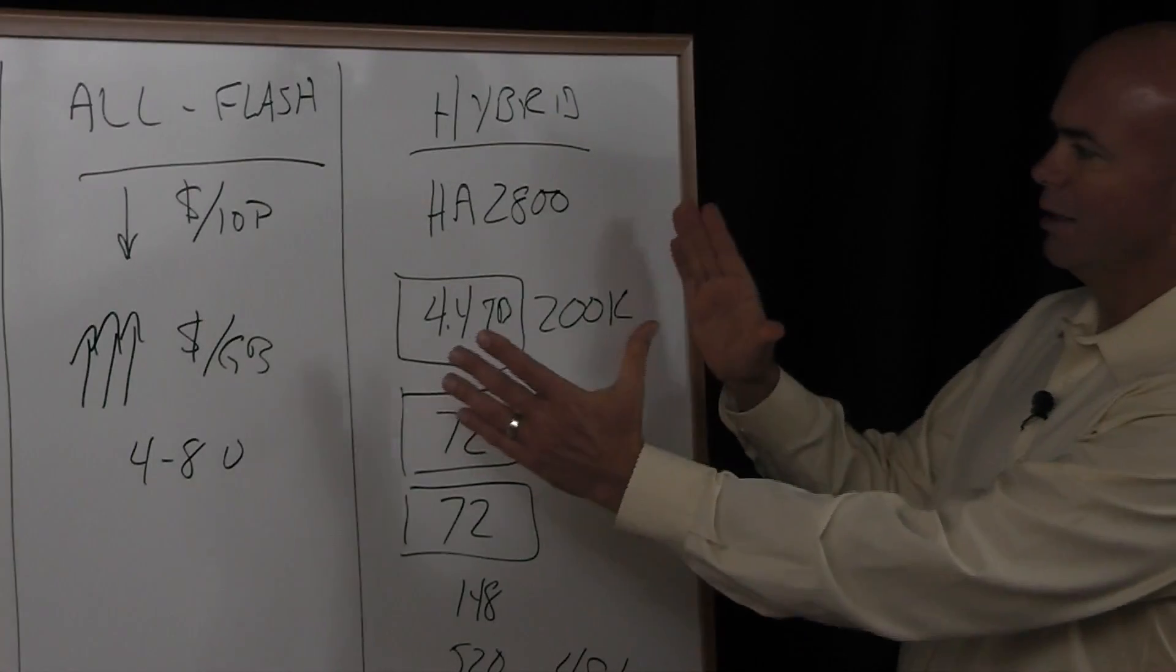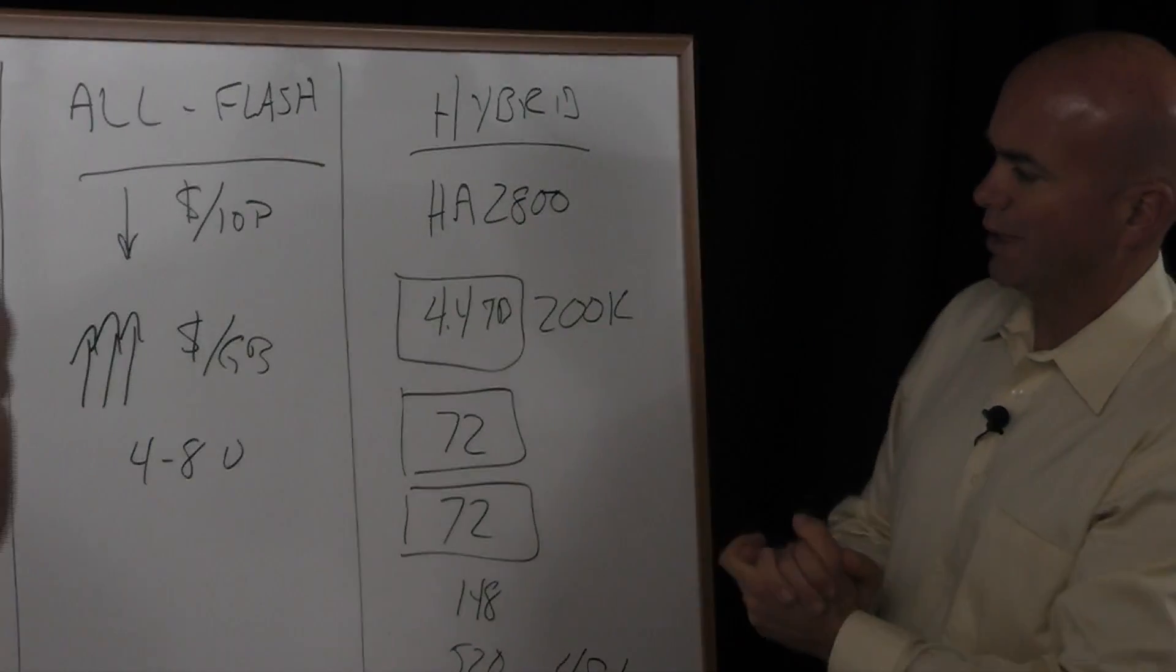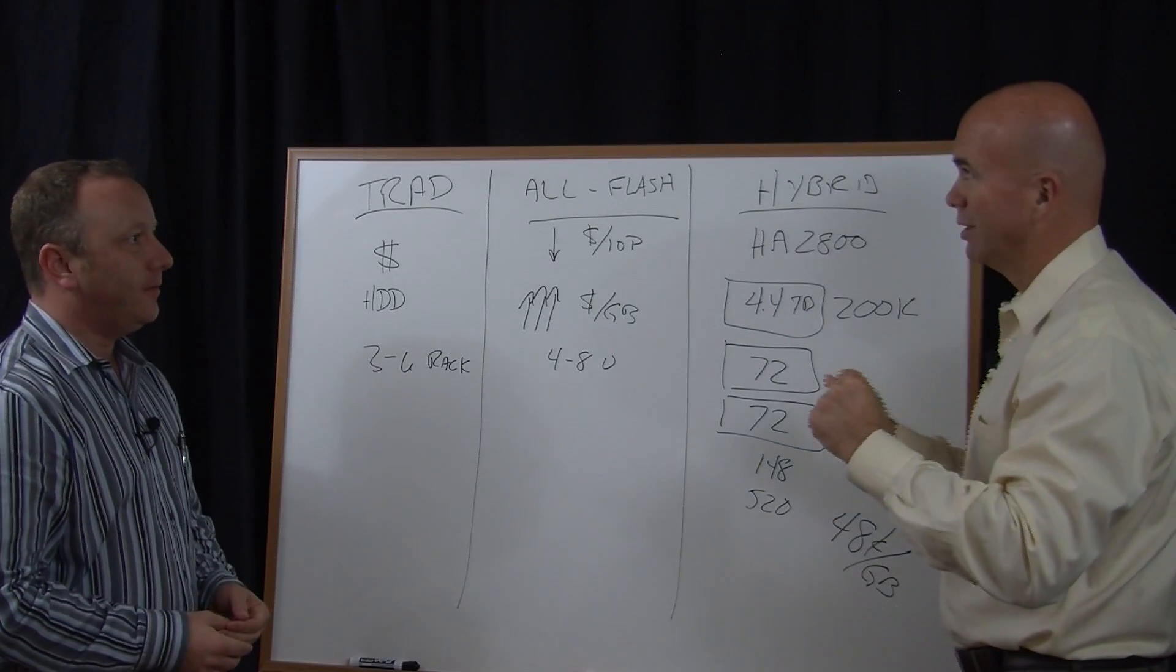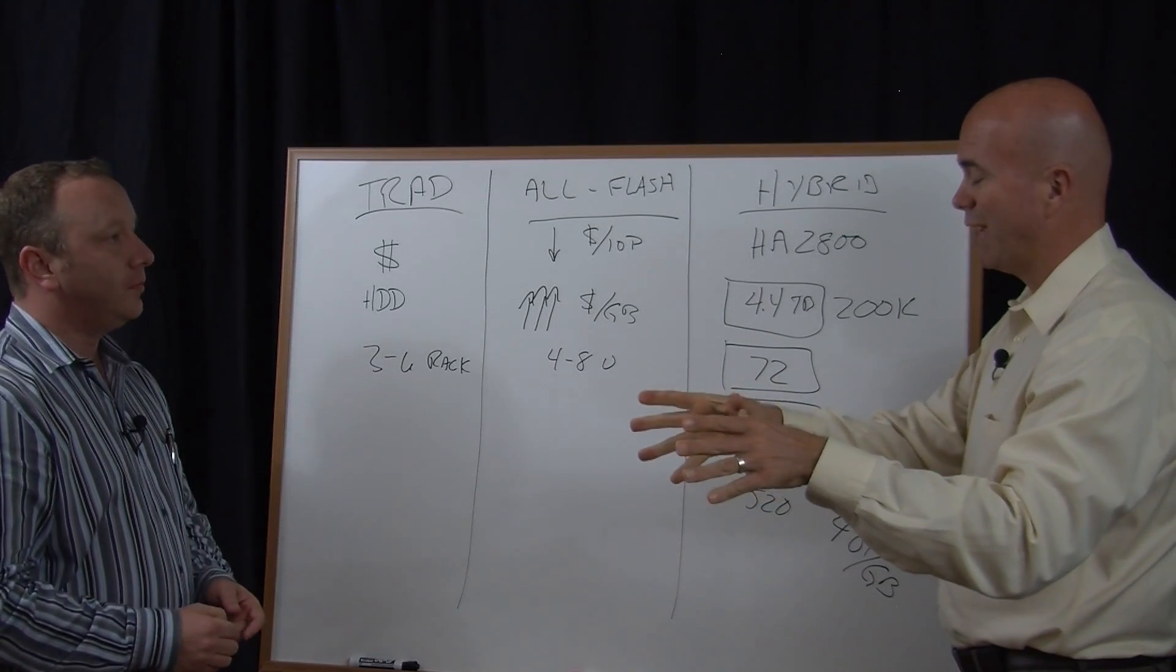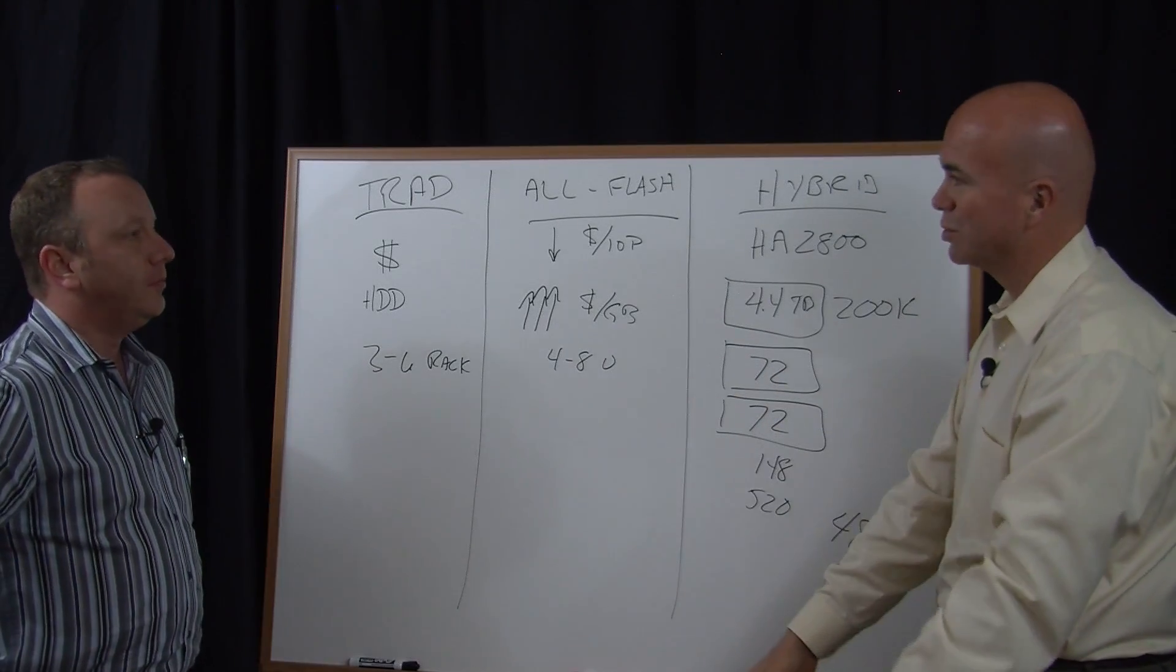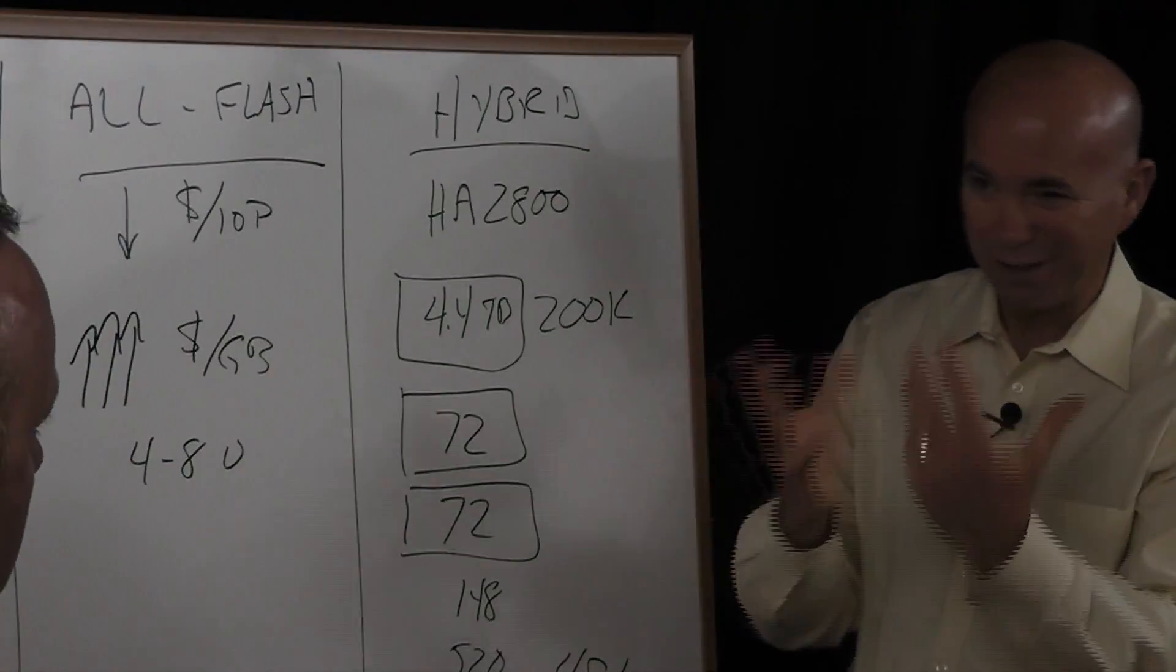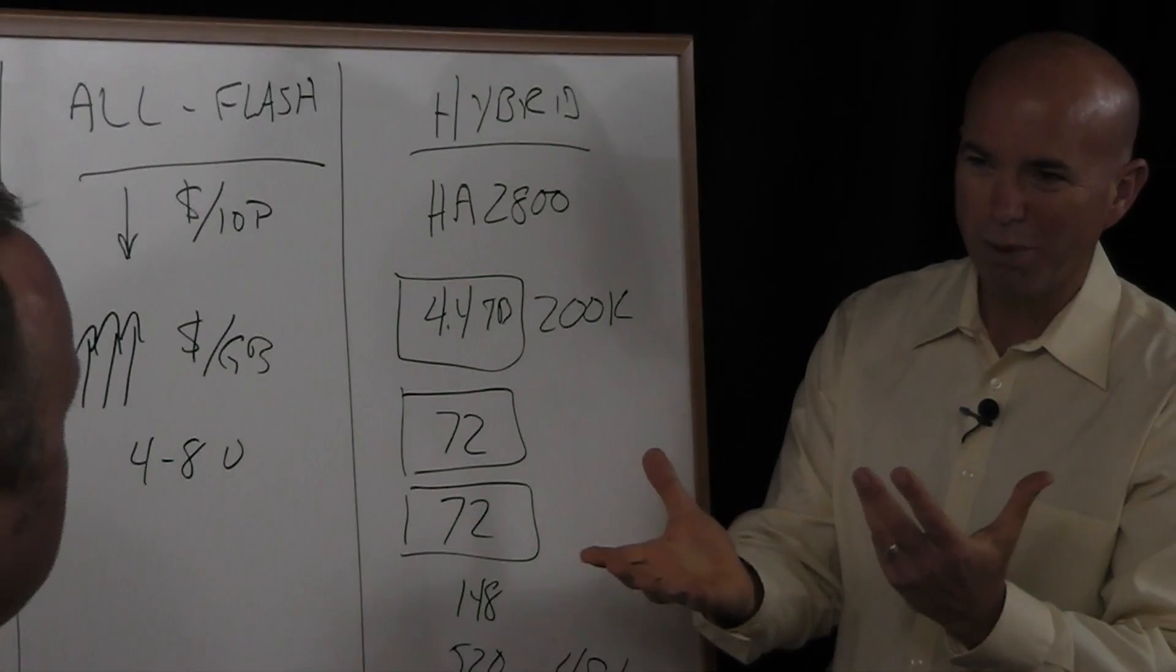And how are people buying that? Because when you first talked about that, I thought, okay, so it puts the whole thing on its head. You can, it almost sounds like you're saying start out and put everything on flash and then as stuff ages, let it drip to a hard drive and you can throw those in later. I don't know if that's a practical way to purchase it though. Is that the way people are really buying it?